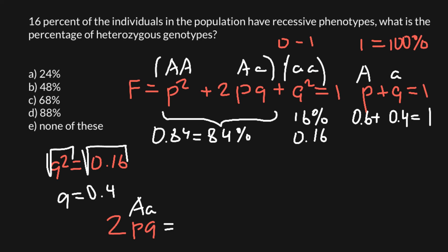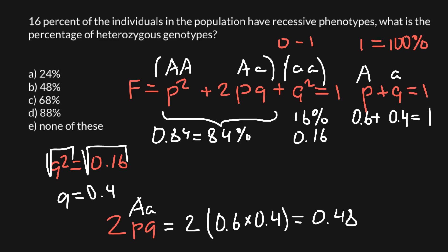The frequency of the heterozygous genotype equals 2 multiplied by 0.6 multiplied by 0.4. So 0.6 times 0.4 equals 0.24, and multiplied by 2 gives us 0.48. This is our answer: 0.48, or in percentage form, 48%. And as you can see, this is answer B.